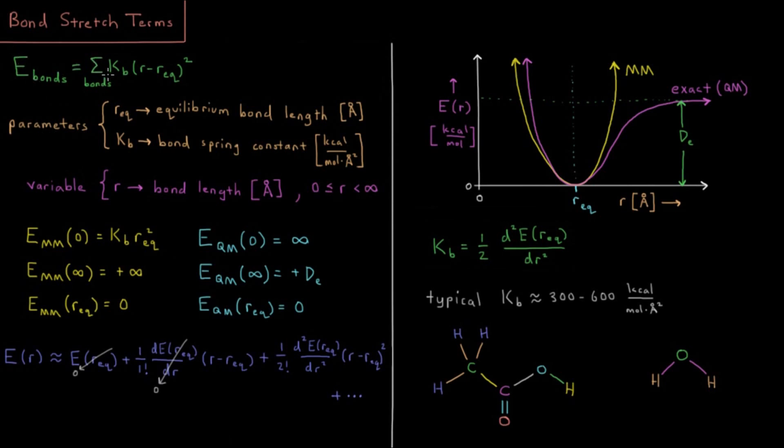For the energy of our bonds, that is a sum over the energy of each individual bond. For each individual bond in our system, the energy is KB, which is this bond spring constant, times the bond length R, how far the two atoms are apart.